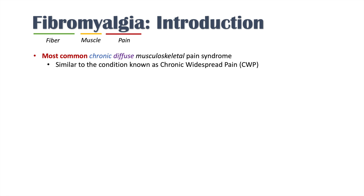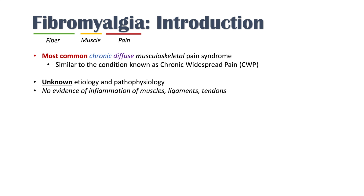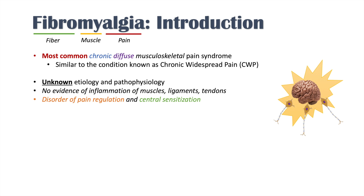Fibromyalgia patients represent a subset of individuals with chronic widespread pain, and the etiology and pathophysiology of fibromyalgia is not known at present. We do know that there's no evidence of inflammation of muscles, ligaments, and tendons. Current theories suggest it's due to a disorder of pain regulation and central sensitization — meaning the central nervous system is hypersensitive to pain stimuli, leading it to perceive pain when there isn't any, or becoming very sensitive to pain stimuli.